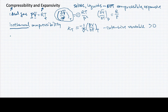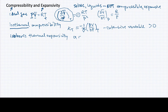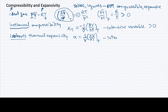Another quantity we look at is the isobaric thermal expansivity. Isobaric means constant pressure. We give this the symbol alpha. It's related to the change in volume when I change the temperature at constant pressure. When we increase the temperature, we increase the volume, so this is a quantity greater than zero. Again, we scale it by the volume so it becomes an intensive variable that can be tabulated.